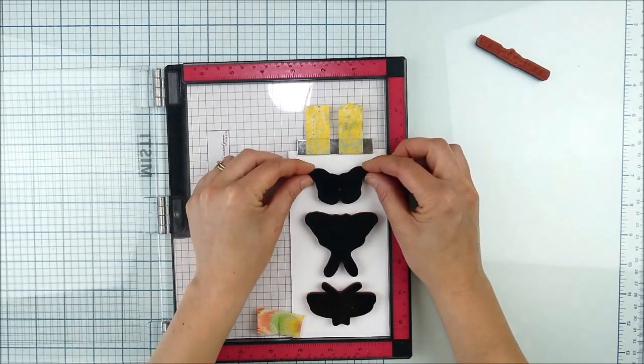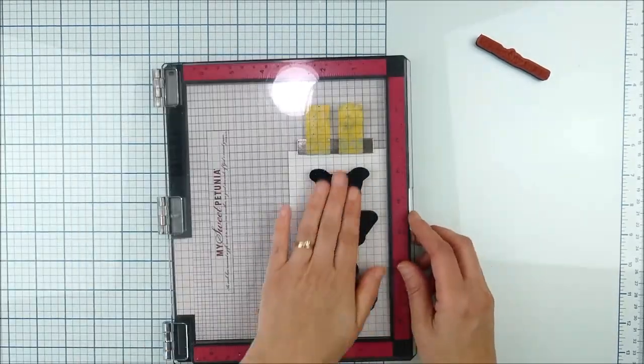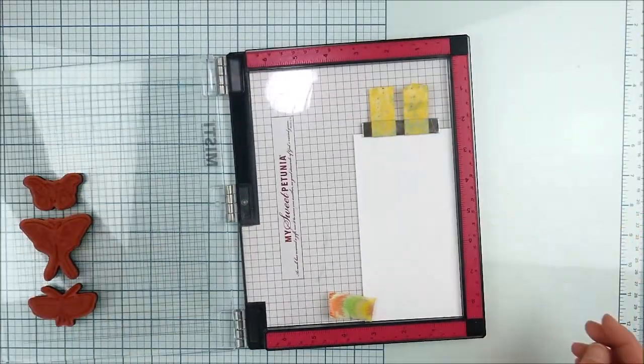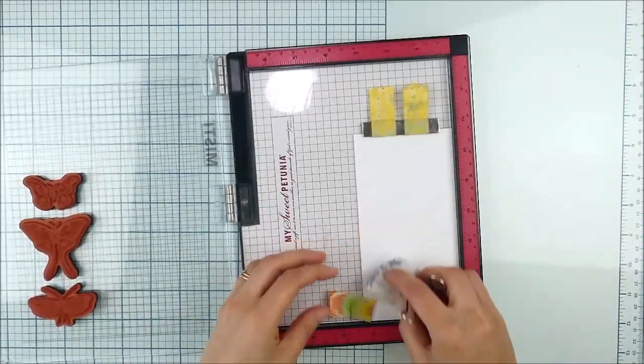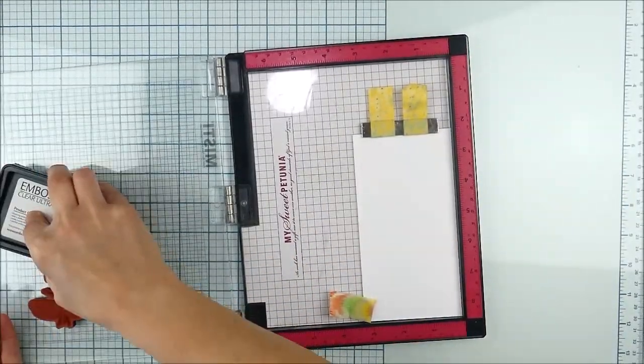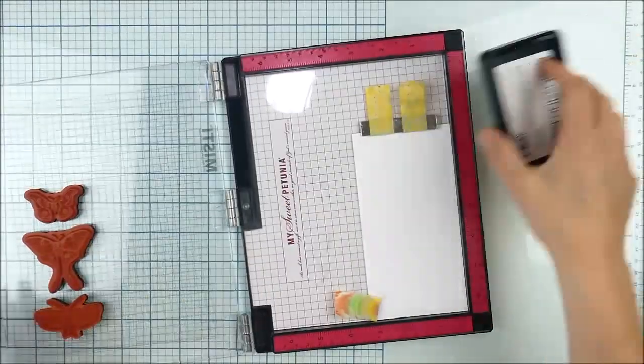I've already got a panel that I have trimmed down to three and a quarter by six and a quarter. That's roughly the size of a mini slimline card. I'll trim this down a little smaller to fit my mini slimline card base, but for now I'm going to keep it larger.